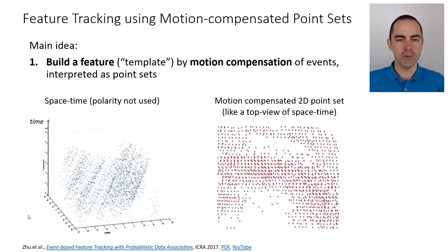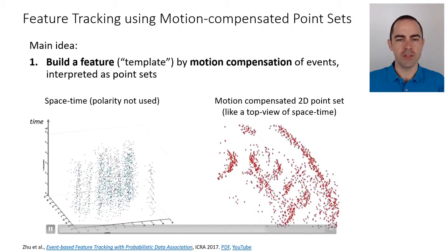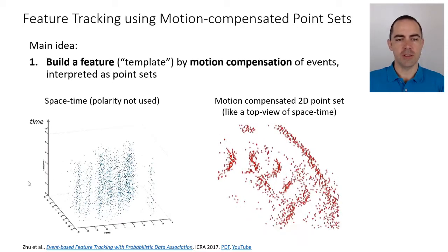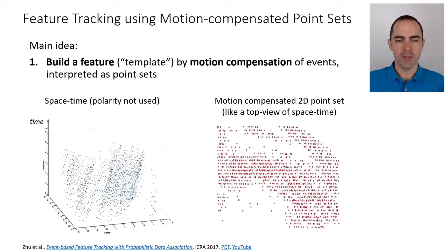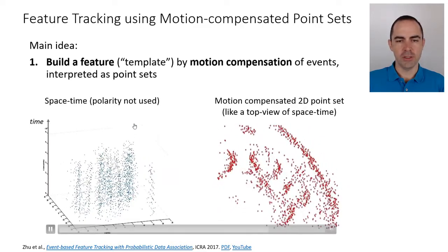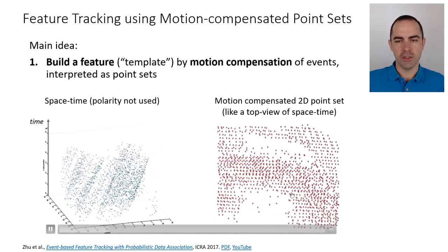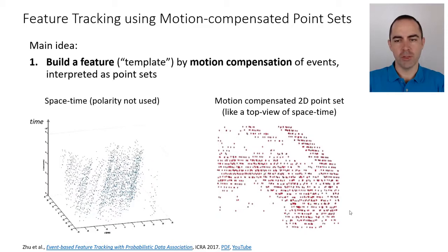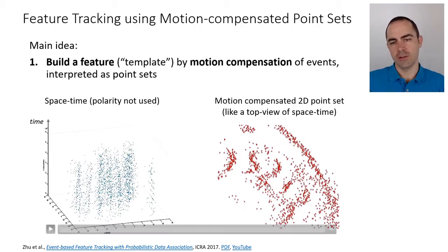What motion compensation is doing is that basically you are trying to find a flow vector, a direction in space-time that best aligns the events. It's modifying the point cloud until the events line up when they are seen from above. What you saw before is that the edge pattern here is not very intelligible, but as soon as you start trying to play around with what is the best direction in which you could look at the events, you can see some edge patterns arising. The events kind of line up.